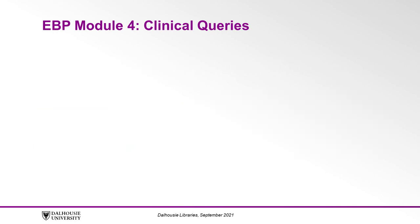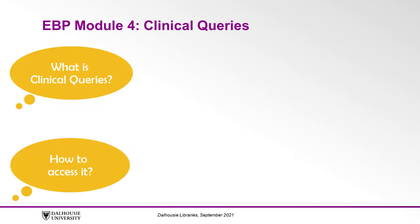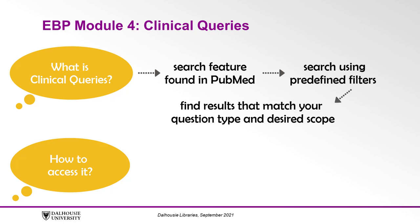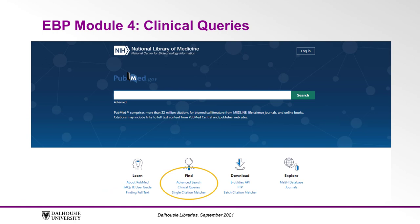Let's start by discussing what Clinical Queries is and how to access it. Clinical Queries is a search feature found in PubMed where you can search using predefined filters to find results that match your question type and desired scope. Clinical Queries also has a helpful filter for clinical studies, as well as a filter to limit results to COVID-19 related results. You can access Clinical Queries from PubMed's home screen under Find.